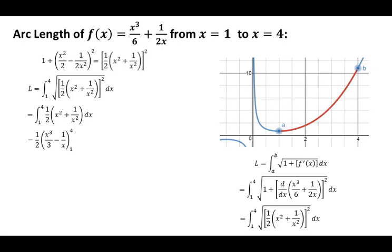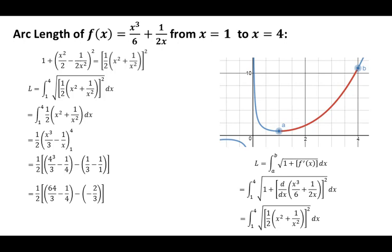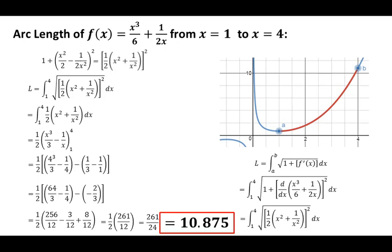Now we take the anti-derivative. Pulling the 1/2 out as a constant, the anti-derivative of x² gives x³/3, and the anti-derivative of 1/x² gives negative 1/x. We evaluate at x = 4 and subtract the evaluation at x = 1. With the 1/2 out front, we plug in 4 and subtract the result at 1. After multiplying through — 4³ = 64 — and getting a common denominator, we compute 256 minus 3 plus 8 to get a numerator of 261. Multiplying the denominator 12 by 2 gives 261/24, which equals 10.875.